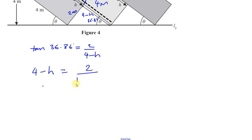So if we add H and subtract this from both sides, 4 minus 2 over the tangent of 36.86 is equal to H. That will be our value of H.